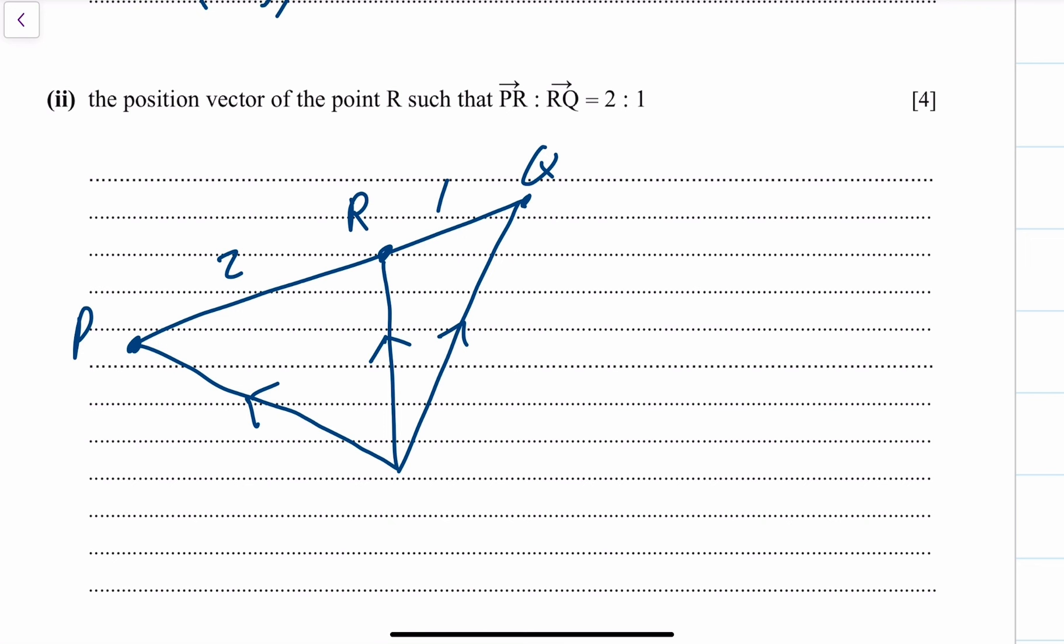We knew what P was, we were told what Q was, and we want to find the position vector of R. To get from O to R, this is a nose to tail method. I'm going to go from O to P, and then I'm going to go two thirds of the way along from P to Q.